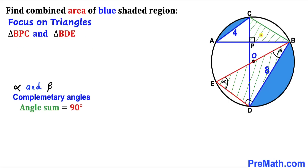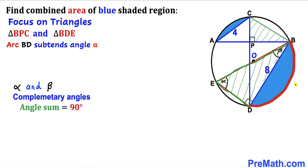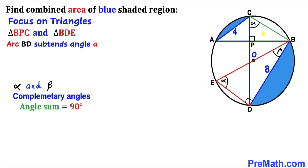Now let's focus on triangles BPC and BDE. Arc BD subtends angle alpha at the circumference here, and this same arc BD subtends that same angle at the circumference at another point as well — so both inscribed angles are alpha. In triangle BPC, we know the angle at P is 90 degrees, one angle is alpha, and since alpha and beta are complementary, the remaining angle must be beta.